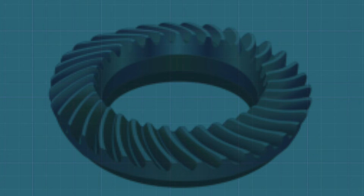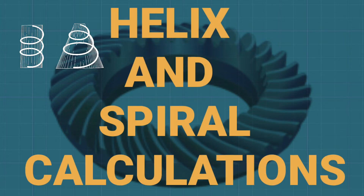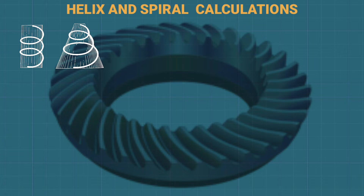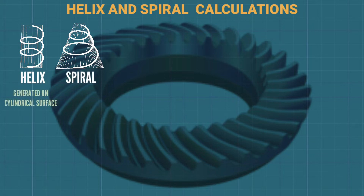In this video we can learn about helix and spiral calculations. This is a step-by-step tutorial. The difference between helix and spiral: the helix is generated on a cylindrical surface, while the spiral is generated on a flat surface.